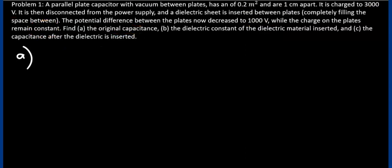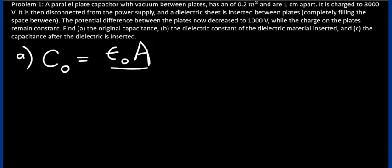Part A: the original capacitance. We are looking for the capacitance with vacuum between the plates. This is a parallel plate capacitor, so the expression is permittivity of vacuum times the area — the surface area of the plates — divided by the separation distance.